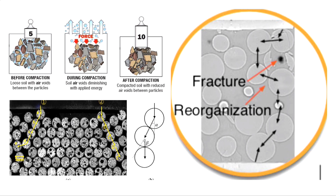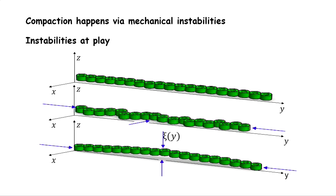We'll first look at the simplest version of compaction - a random loading, not tapping. Think of a chain of cylinders. You bang it; it can go in-plane and buckle randomly in one direction, or you can get classic Euler buckling out of plane. The experiments used small rubber cylinder studs that can deform, allowing us to see internal stress.